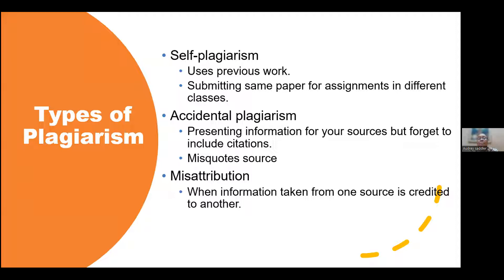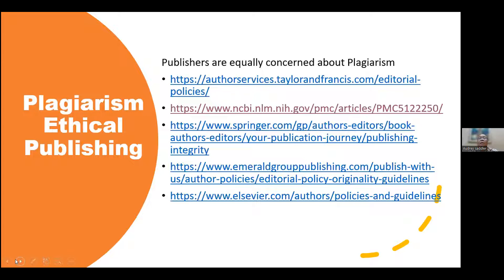There is accidental plagiarism — presenting information from your sources but forgetting to include the citation, or misquoting sources by citing the wrong page number. For example, a quotation taken from page five might be cited as page four or six, both of which are incorrect. Then there is misattribution, when information is taken from one source and is credited to another. These are just some of the different types of plagiarism that you will come across.